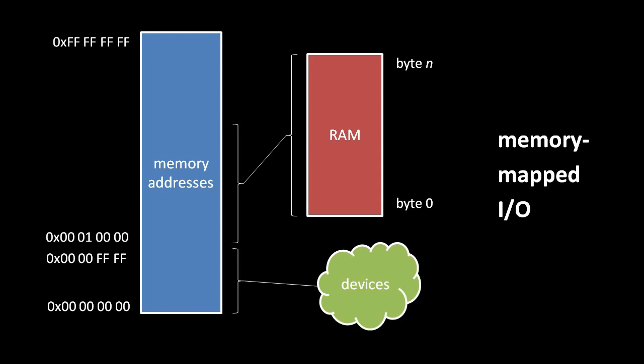What are the CPU instructions for reading and writing device registers? In CPUs which use what's called memory-mapped I/O, some memory addresses specify device registers instead of bytes of system memory. For example, the diagram depicts a system in which the memory addresses from 0 to FFFF are mapped to device registers instead of bytes of RAM, such that the first byte of RAM actually starts at address 10000. With memory-mapped I/O, we can read and write device registers using the very same copy instructions used to read and write bytes of system memory.